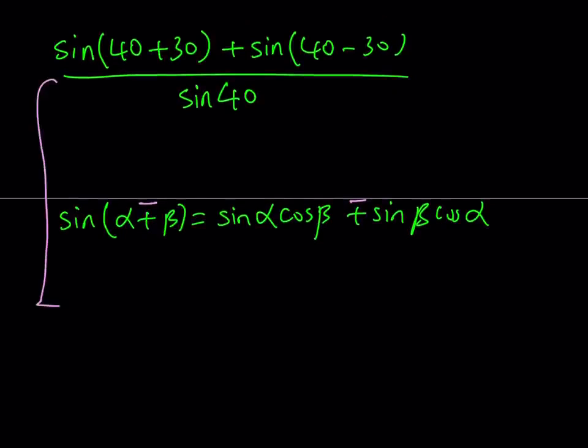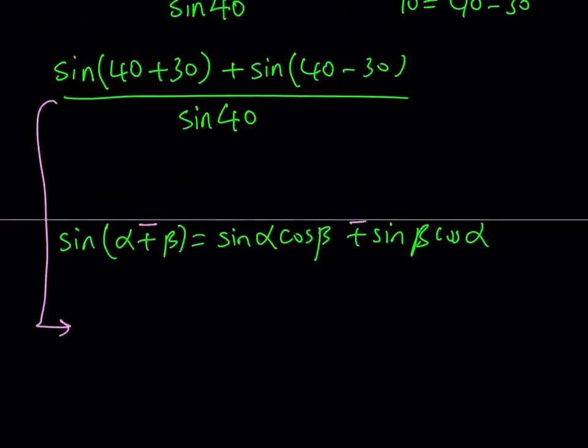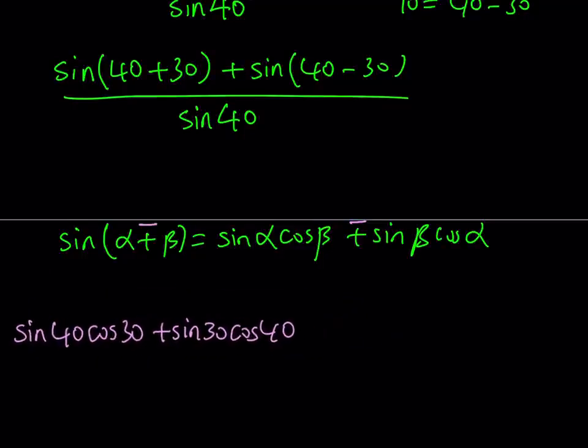So using those formulas, we can just go ahead and express this as a sum of two things. So we can write sin 40 cos 30 + sin 30 cos 40 for the first part, and then I can just move this a little bit to the left so I have more room.